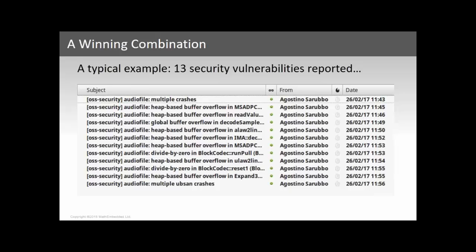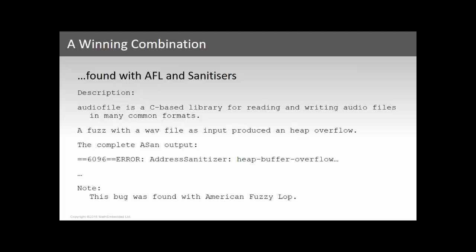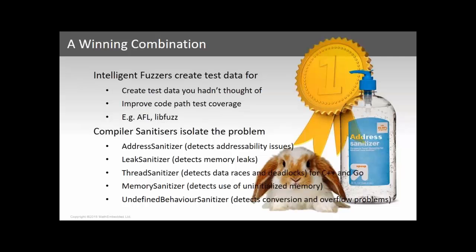Coming back to the summary: we've got a solution for locating difficult code and a solution for testing all code paths. Together, they're causing things like this to happen — 11 emails covering 13 security vulnerabilities posted to the open software security mailing list, where one researcher identified 10 security vulnerabilities through buffer overflows and three through undefined behavior sanitization using these techniques. Each email is the output of the address sanitizer with full source code line details, and at the bottom: 'This bug was found with American Fuzzy Lop.'